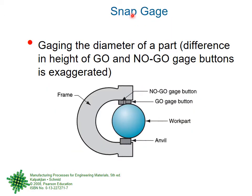A snap gauge works like a ballpoint pen cap — when you apply a small force, a click or snap is heard and it locks in place. As the name implies, the snap gauge has a go side and a no-go side. When you apply a small force on the go side, the part should snap through. On the no-go side, the part should not be able to pass through.